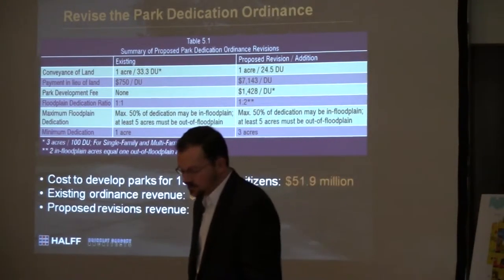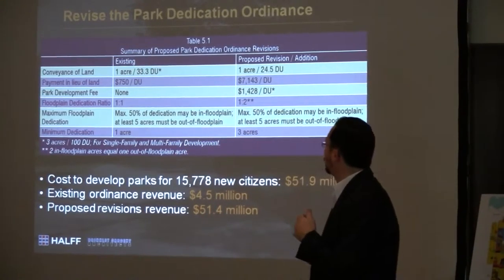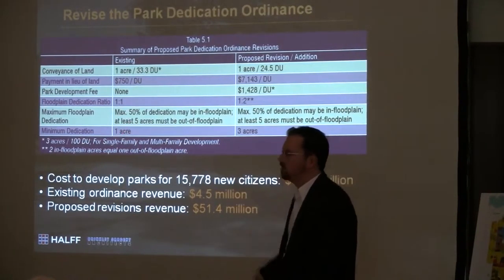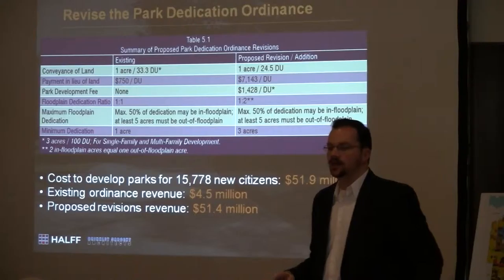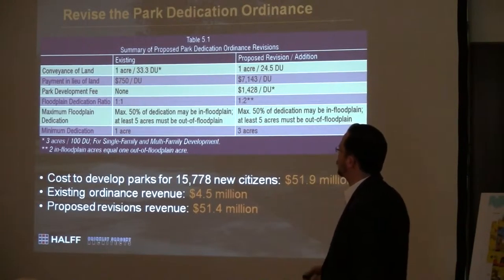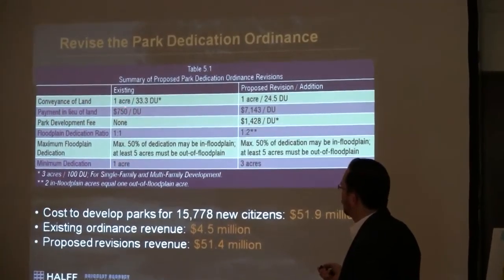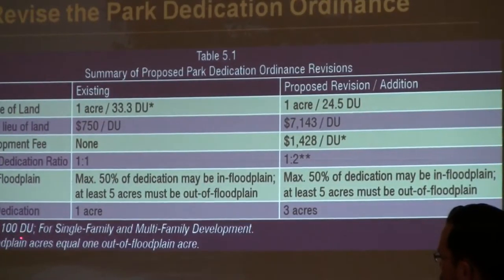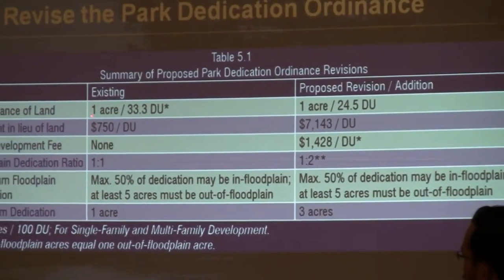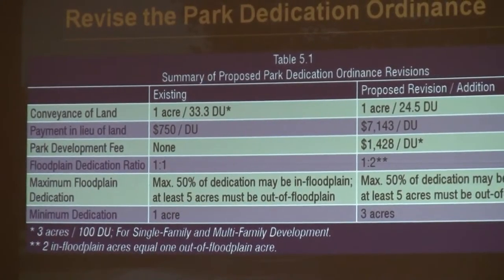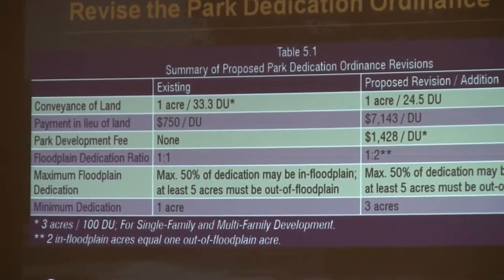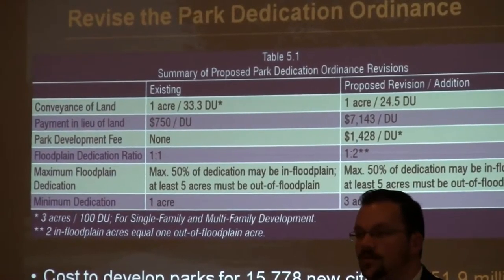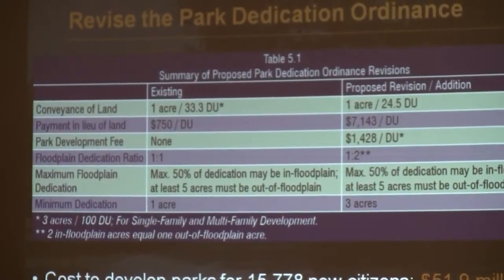One of the things we were tasked to do in this project was to look at your current park dedication ordinance. What you have on the left is basically a table of what you currently have in your ordinance today. When a new subdivision is going to be developed, what is required of that development? Currently, your conveyance of land requires — the way it's written — three acres per 100 dwelling units, or one acre per 33 and a third dwelling units. If the decision is made to give a payment in lieu of giving land, the requirement is $750 per dwelling unit.